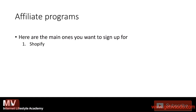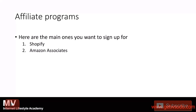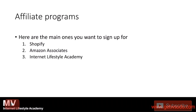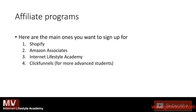Number one: Shopify. Number two: Amazon Associates, where you can promote anything from Amazon.com and earn a commission. You could also promote Internet Lifestyle Academy — just make sure you apply for it, and there will be instructions below. And ClickFunnels, which is for more advanced students.